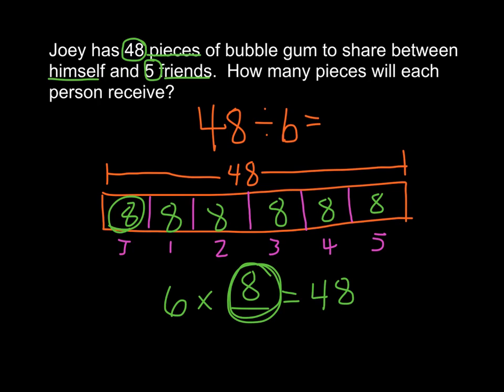If you didn't know your multiplication fact, you could draw the strip diagram and then literally go one for you, one for you, one for you, one for you, one for you, one for you — all the way until you got to 48.